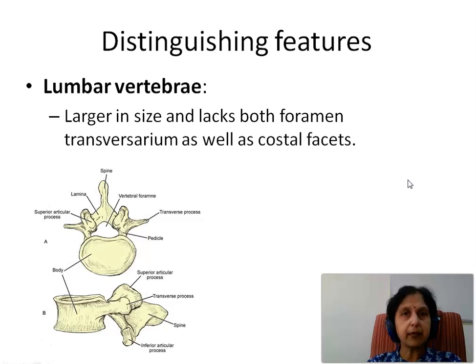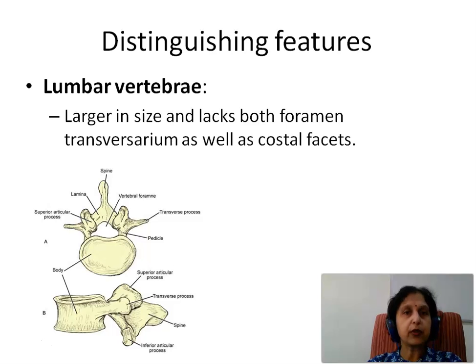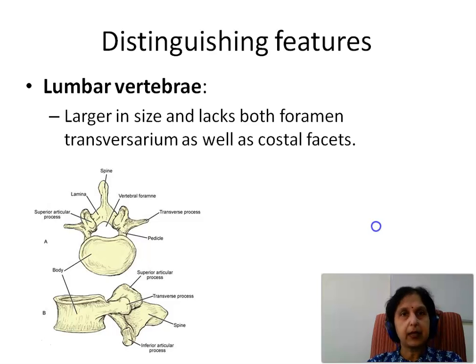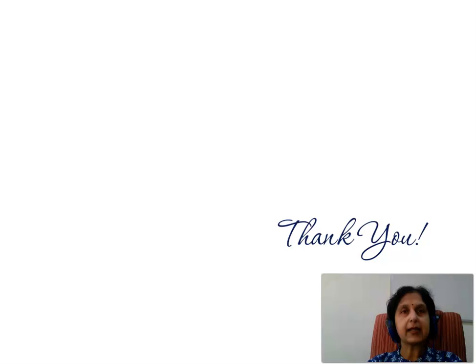The lumbar vertebrae are larger in size. They lack both the foramen transversarium as well as the costal facets. Here we see a picture of the lumbar vertebra which is much larger compared to the cervical and the thoracic vertebrae, and shows neither the foramen transversarium nor costal facets on the sides of the body. This is how we differentiate between cervical, thoracic and lumbar vertebrae. Thus, we have seen the parts of a vertebra, how to differentiate between the vertebral types, and the primary and secondary curvatures and movements of the vertebral column. Thank you.